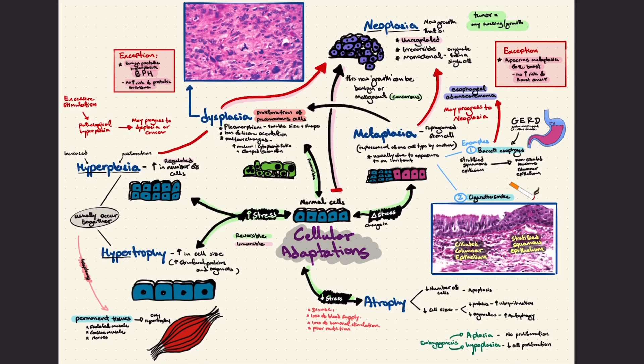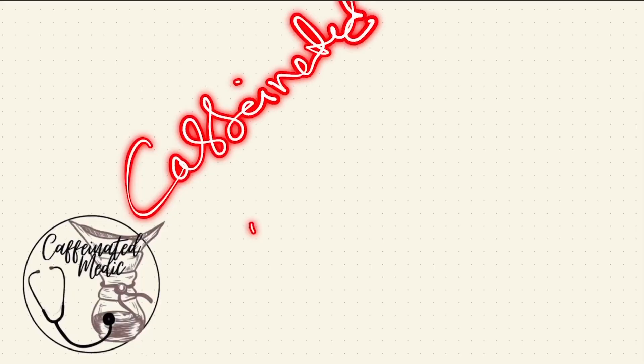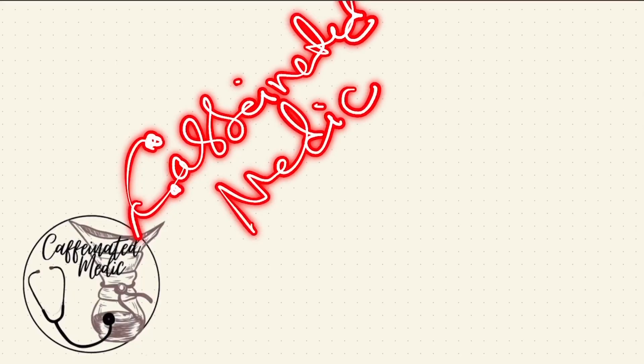That's all for cellular adaptation. Make sure you check out my next video on cellular injury — what happens when a cell can't adapt to stress. Thanks for watching. If you find this video useful, make sure you smash the like button — or just gently tap it, it's up to you. Share this video with anyone that will find it useful, leave questions in the comment box below, and subscribe and hit the bell icon so you don't miss future videos. This is the Caffeine Medic, signing off — till next time, take care.